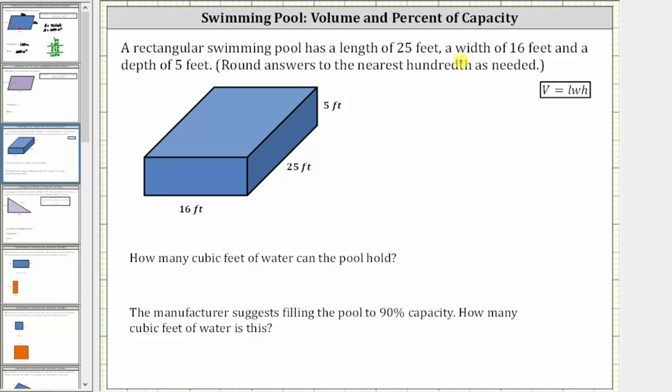The pool is like a big box, or a right rectangular prism as shown here, where the length is 25 feet, the width is 16 feet, and the height is 5 feet.